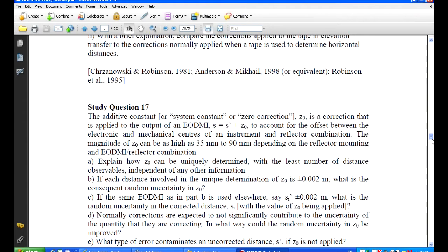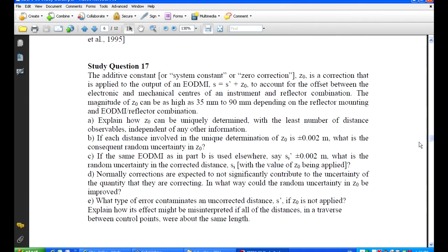Unique determination is the one where you have three points and you actually measure the two intermediate distances and the overall distance. The problem with that is that there's no redundancy. And if you go through the equation you'll see that the uncertainty in any one measured distance propagates into the uncertainty of the additive constant by a factor of root three.